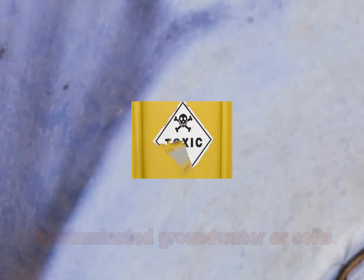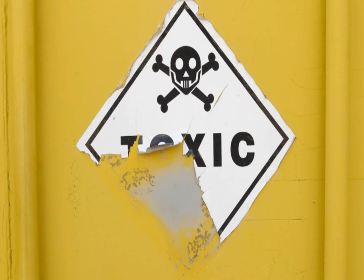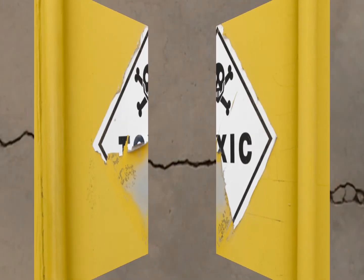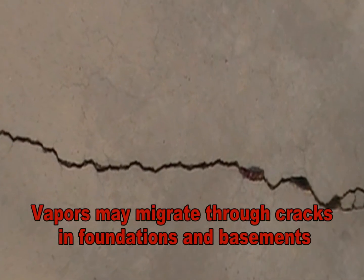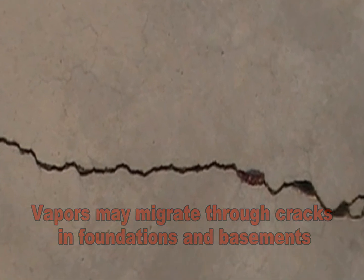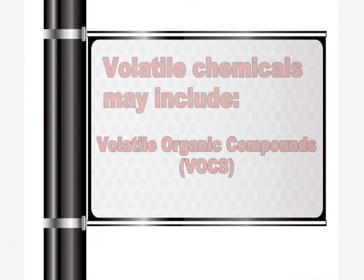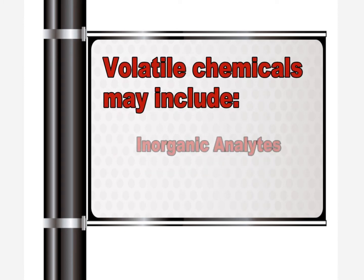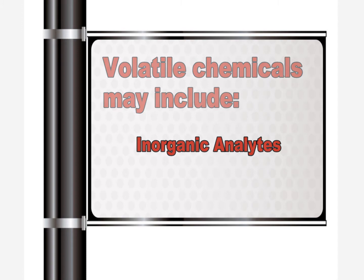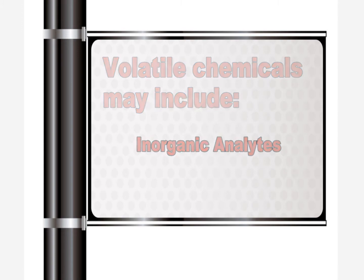Volatile chemicals can emit vapors that may migrate through subsurface soils and into indoor air spaces of buildings, similar to that of radon gas seeping into homes. Volatile chemicals may include volatile organic compounds, select semi-volatile organic compounds, and some inorganic analytes such as elemental mercury, radon, and hydrogen sulfide.